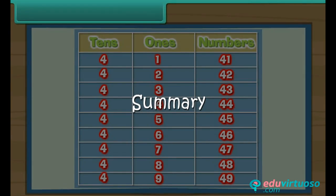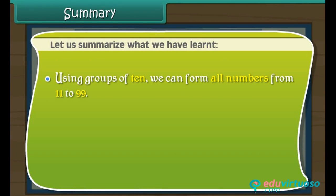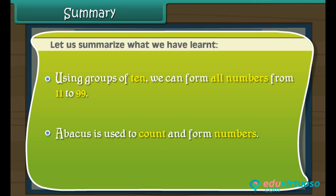Summary. Let us summarize what we have learned. Using groups of ten, we can form all numbers from 11 to 99. An abacus is used to count and form numbers.